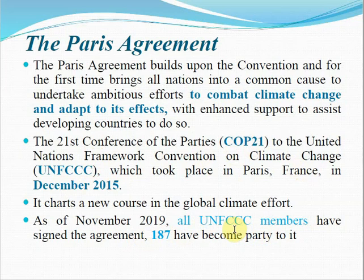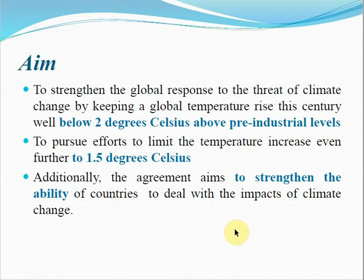The aim of the Paris Agreement is to keep the global temperature rise this century below 2 degrees Celsius above pre-industrial levels. This means the difference between temperatures before the industrial revolution and current temperatures should be less than 2 degrees Celsius. It further aims to reduce the temperature increase to below 1.5 degrees Celsius.